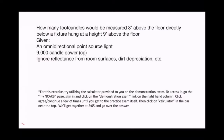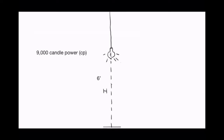For this problem we're pretending we're in a free field — we're ignoring reflectance from room surfaces and any depreciation of lumens from dirt or things that aren't cleaned. So we have a light bulb nine feet above the floor and a desk height three feet above the floor, giving us a working height of six feet.